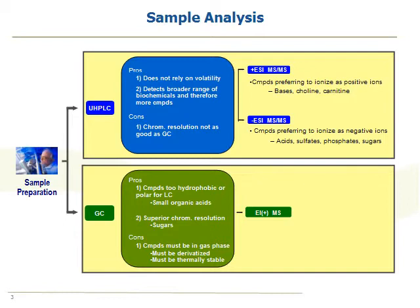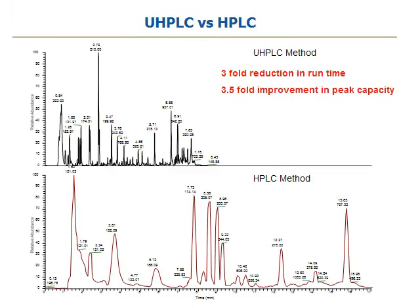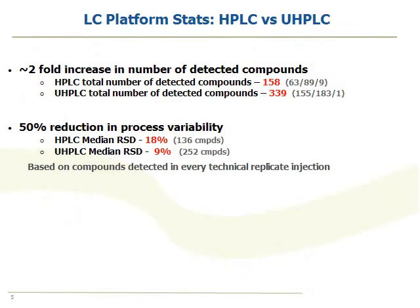We were able to do some of this improvement because we updated our LC technology. At the beginning of this year, we switched from a conventional HPLC method to a UHPLC method. This is an example of the two total ion chromatograms from human plasma. The analytical method was designed so that we could take advantage of the reduction in run time that UHPLC allows, but also get an improvement in peak capacity. The method was designed such that we would get a little bit of extra time, and this extra time is what allowed us to implement two injections. When we switched to the UHPLC, we actually doubled our number of named compounds.